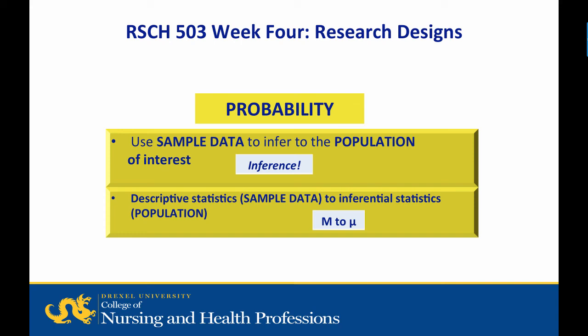Investigators use sample data to infer findings to the larger target population of interest on a particular variable. Inference of findings from a sample to a population requires knowledge and skills of descriptive statistics used to describe the sample, which are then used to conduct inferential statistics used to understand the target population. For example, the sample's mean on a dependent variable, illustrated as capital letter M, is used to infer to the population's mean on that same dependent variable, or Greek letter mu.